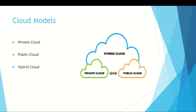Hybrid cloud is a computing environment that uses both public and private clouds in an interconnected environment. A hybrid cloud can allow a private cloud to handle increased temporary demand by deploying public cloud resources, and can provide an extra layer of security. For example, you can keep sensitive data or applications on your private cloud's on-premises servers, and put less sensitive workloads on the public cloud. If you're running out of resources, you can add capacity from the public cloud.